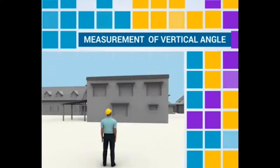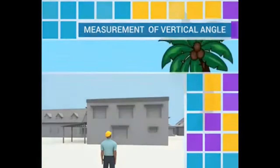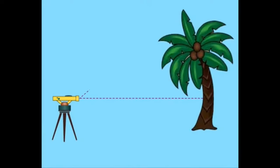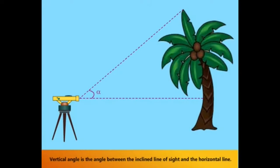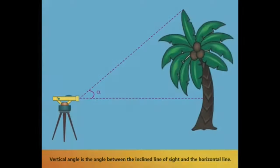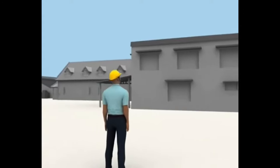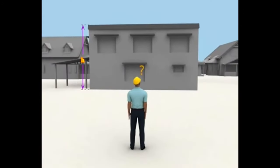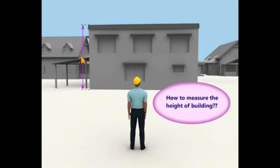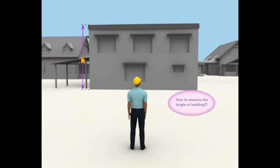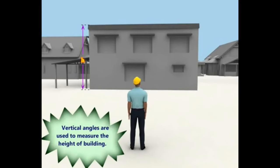Measurement of Vertical Angle. Let us see the procedure to measure the vertical angle. Vertical angle is the angle between the inclined line of sight and horizontal line. How to measure the height of a building? Vertical angles are used to measure the height of buildings.